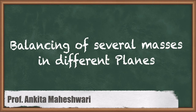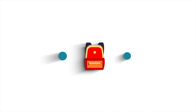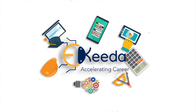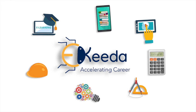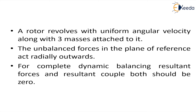Hello everyone. In this video, we will discuss about balancing of several masses in different planes. To write the equations, we have assumed that there is a rotor which is rotating with some uniform angular velocity omega radian per second, and there are three masses attached to it. You can use four, five, two, any number of masses. For derivation, we have used three masses.